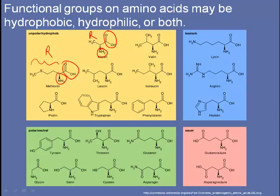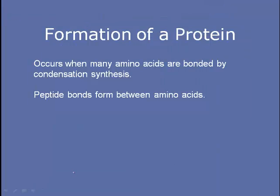These amino acids are classified into four different groups. For our needs, we'll think of amino acids as either being hydrophobic, hydrophilic, or possibly a combination of both depending upon their functional groups. How does a protein form? Maybe you're already thinking about how they form because you know how carbohydrates form and you know how lipids form. Basically, a protein forms when many amino acids are bonded together by condensation synthesis.